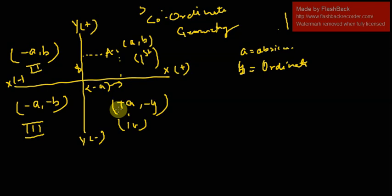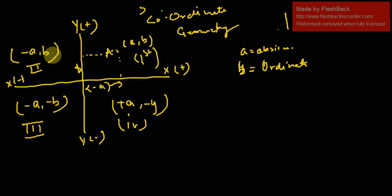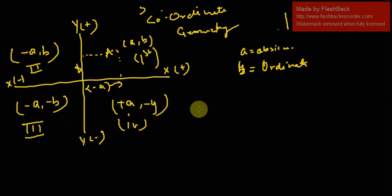If the abscissa is positive and the ordinate is negative, the point lies in the fourth quadrant. To summarize: in the first quadrant both a and b are positive; in the second quadrant a (abscissa) is negative and ordinate is positive; in the third quadrant both abscissa and ordinate are negative; and in the fourth quadrant abscissa is positive and ordinate is negative.